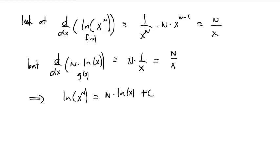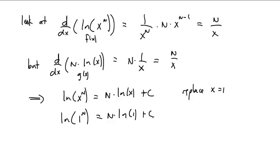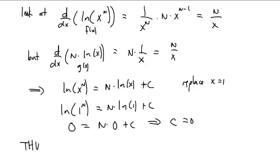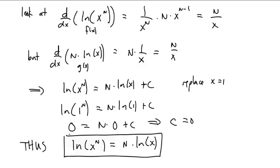Because we know that the natural log of 1 is 0, we can figure out what this constant is. Replace x with 1: ln(1^n) = n·ln(1) + c. 1 to any power is 1, and ln(1) is 0, so 0 = n·0 + c, meaning c is 0. Thus, we conclude that ln(x^n) is the same thing as n·ln(x). This is that beautiful ability to take exponents out front of a logarithm.